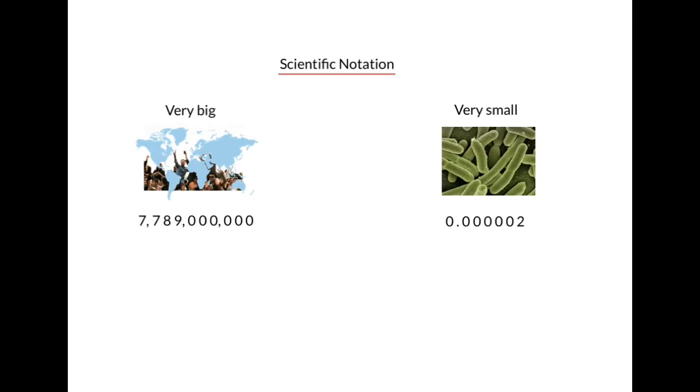Compare that to the length of a bacterium. This is a very small number and if we think about place value, tenths, hundredths, thousandths, ten thousandths, hundred thousandths, millionths. So one of these E. coli bacterium is two millionths meters long and our world population is close to eight billion people.